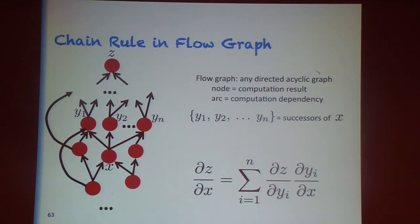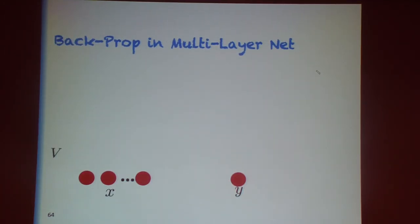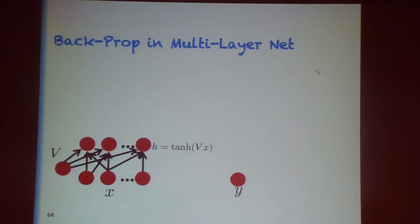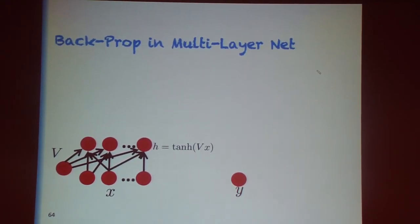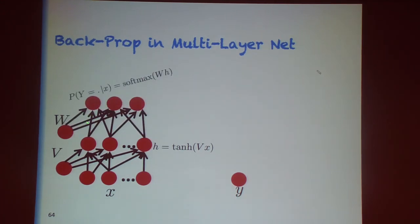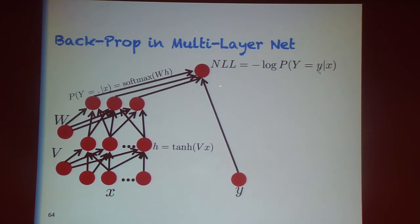Applying this to a multi-layer neural net: we have inputs x, targets y, parameters b, and compute neuron outputs using tanh instead of sigmoid (essentially the same). A second layer projects to output probabilities for different classes using softmax. We take these probabilities and since we know the correct class, the loss is the negative log-likelihood — the negative log of the output corresponding to the correct class — which we want to minimize.